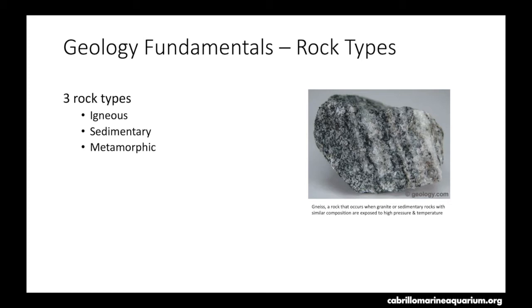The final rock type is metamorphic rocks. These are rocks that have been transformed due to being exposed to extreme pressures and/or extreme temperatures — so these would be at fault boundaries or really deep in the earth. These are pre-existing rocks that have been altered due to these stresses. They could be igneous rocks, sedimentary rocks, or even other metamorphic rocks that experience even more extreme pressures and temperatures. The photograph here is a gneiss, which is a metamorphic rock — banded rocks with alternating dark and light minerals, usually formed from granites or sedimentary rocks subjected to extreme pressures and temperatures.